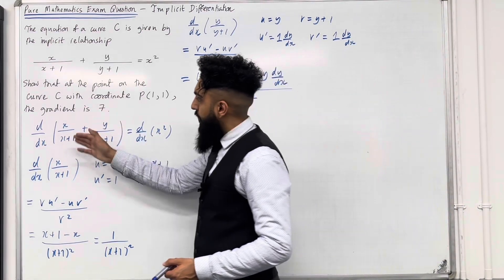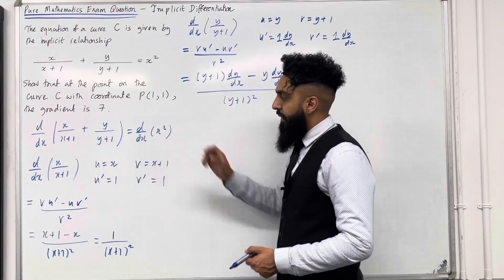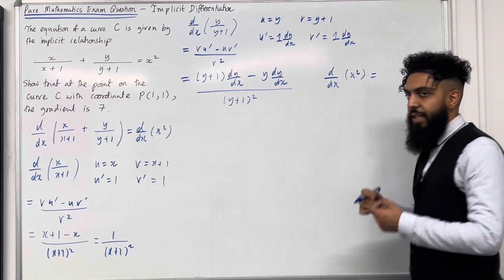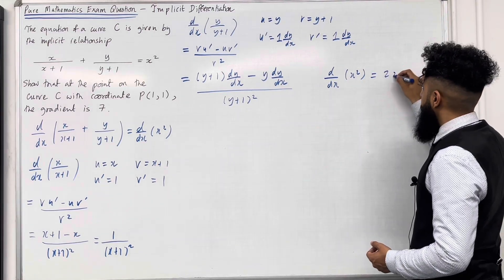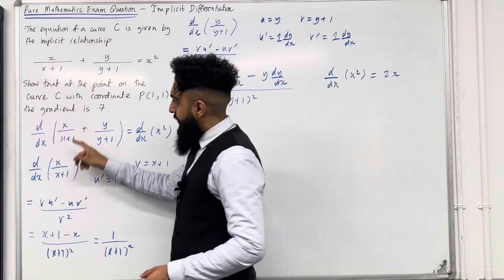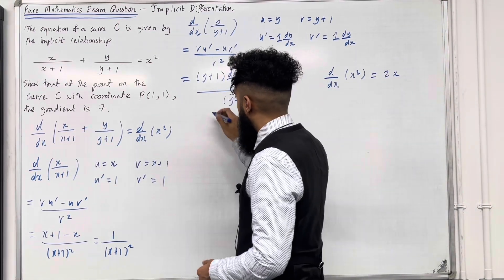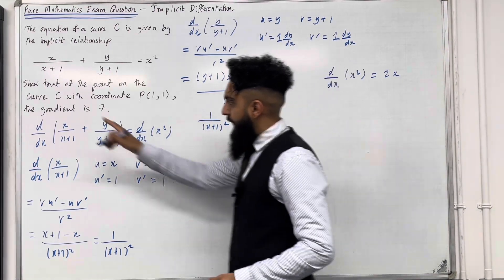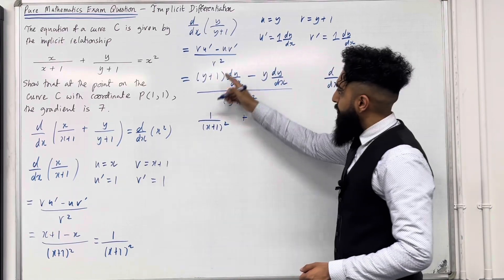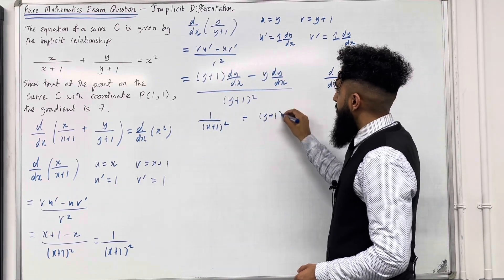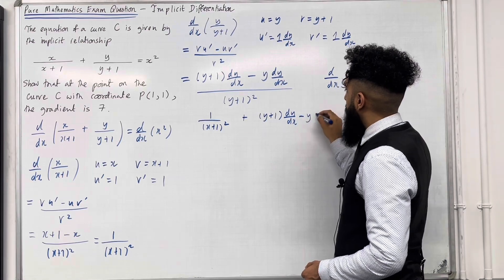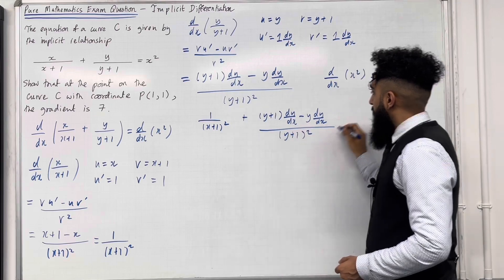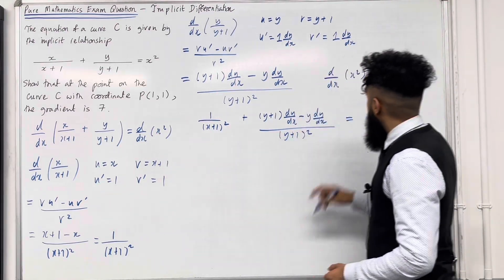Now I'm going to find d over dx of x squared. Differentiating x squared with respect to x gives 2x. So putting it all together: 1 over x plus 1 squared, plus the fraction y plus 1 dy over dx minus y dy over dx all over y plus 1 squared, equals 2x.